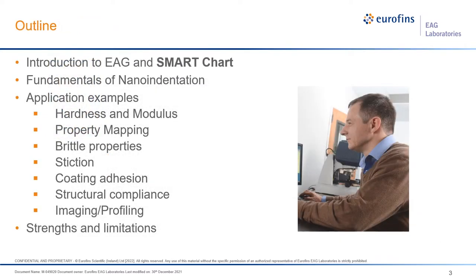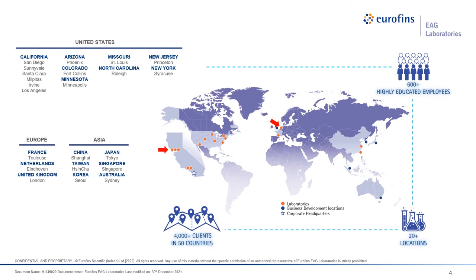Today's webinar outline covers first a little about the company and the Smart Chart, followed by fundamentals on nano-indentation and application examples — starting from something simple like hardness and modulus, then more complex topics — and concluding with strengths and limitations. EAG has several hundred highly educated and experienced employees working in laboratories around the world, many with PhDs. EAG covers over 40 analytical techniques, with nano-indentation available in Sunnyvale, California and Eindhoven, the Netherlands. Our range of equipment and expertise allows us to provide more than 4,000 clients in 50 countries with comprehensive, peer-reviewed reports within a few days of sample receipt, and if necessary, even same-day service.